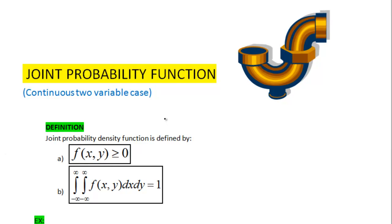In this tutorial, we'll define the concept of joint probability function. Joint probability function is defined as follows: For each value of x and y, f of x and y is greater or equal to 0.